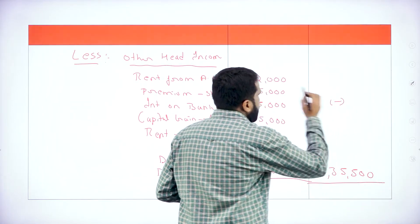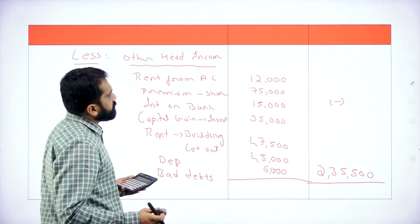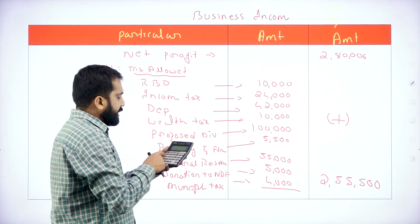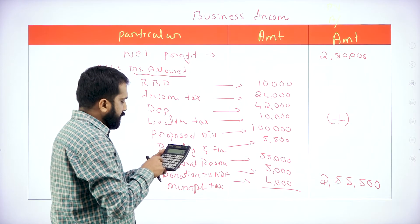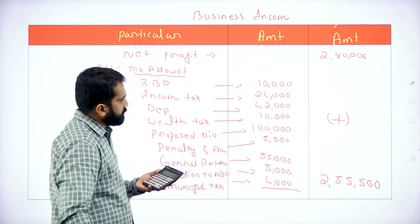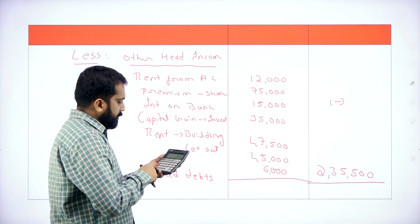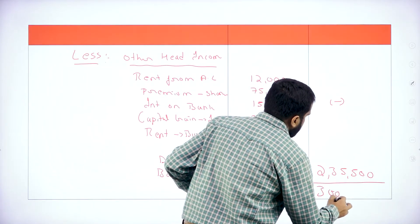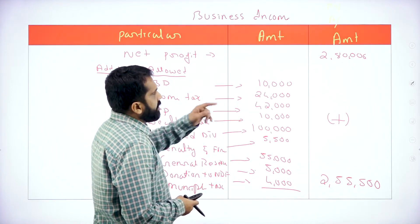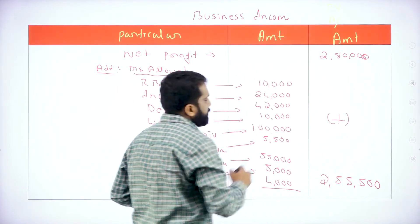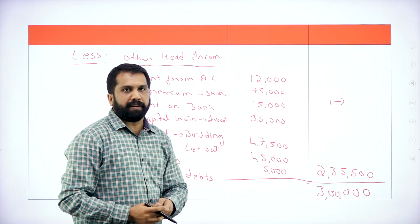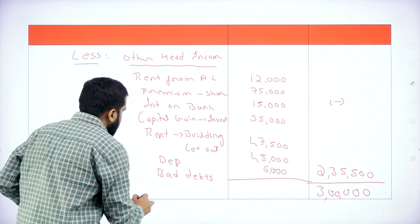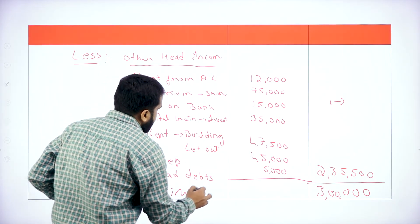We are supposed to subtract the other head income and add the disallowed items. So: 2,80,000 plus 2,55,500 minus 2,35,500. Your answer is 3,00,000. This 3,00,000 we call business income.